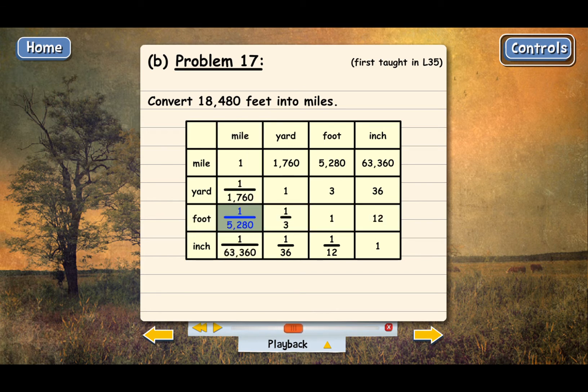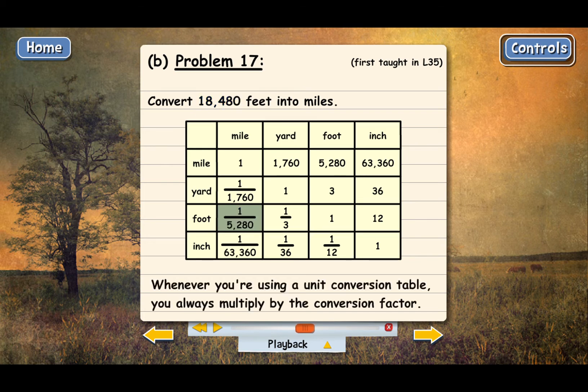Now this number is the conversion factor. It's the number that we need to multiply 18,480 by to get our answer. Remember that whenever you're using a unit conversion table, you always multiply by the conversion factor. That's one of the great things about the unit conversion table. You don't have to think about whether you should divide or multiply. You just go find the number, and then multiply.